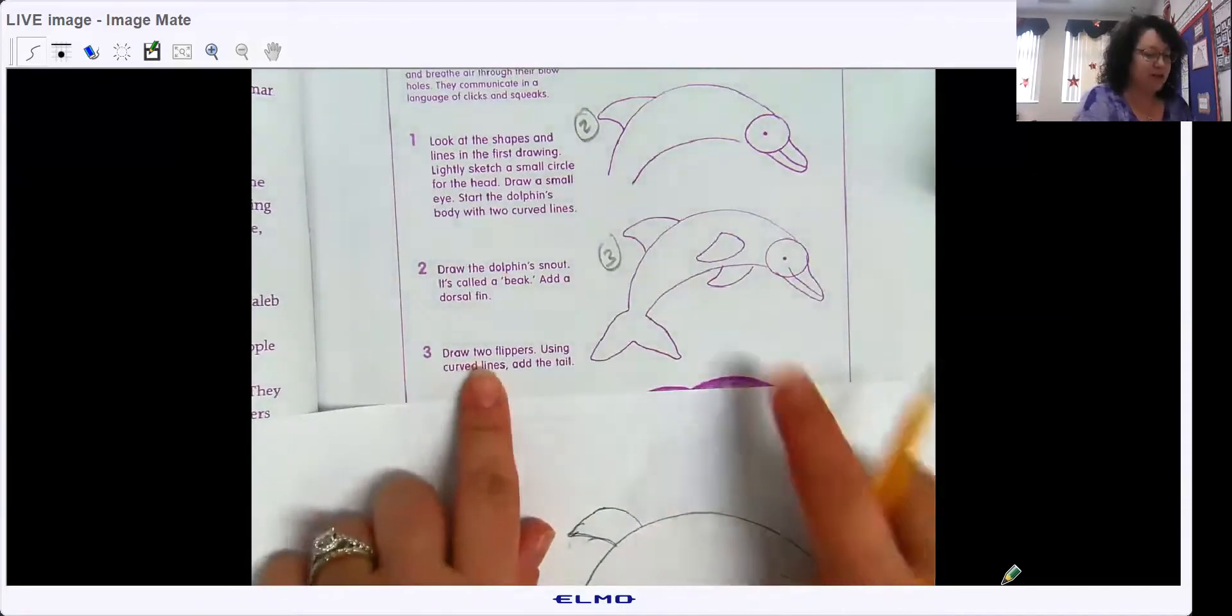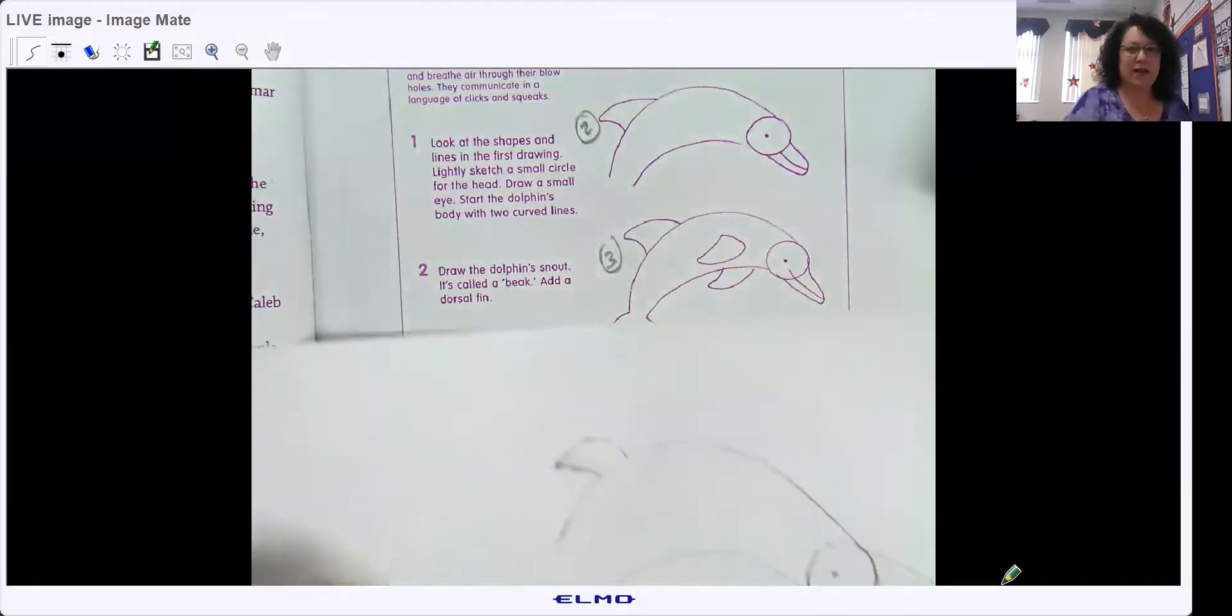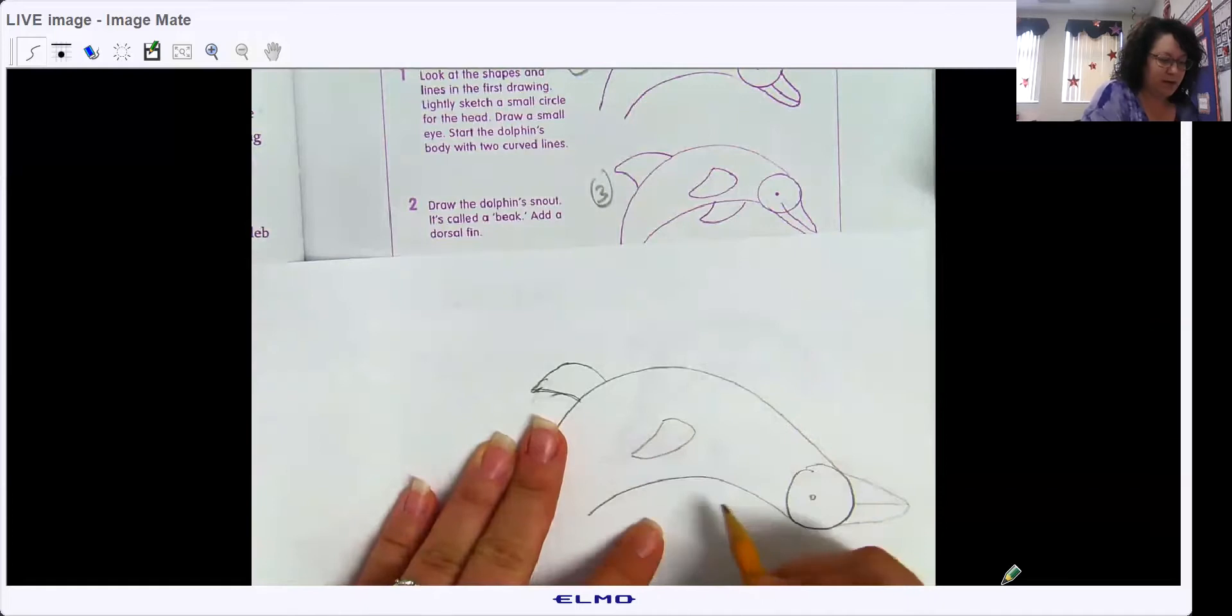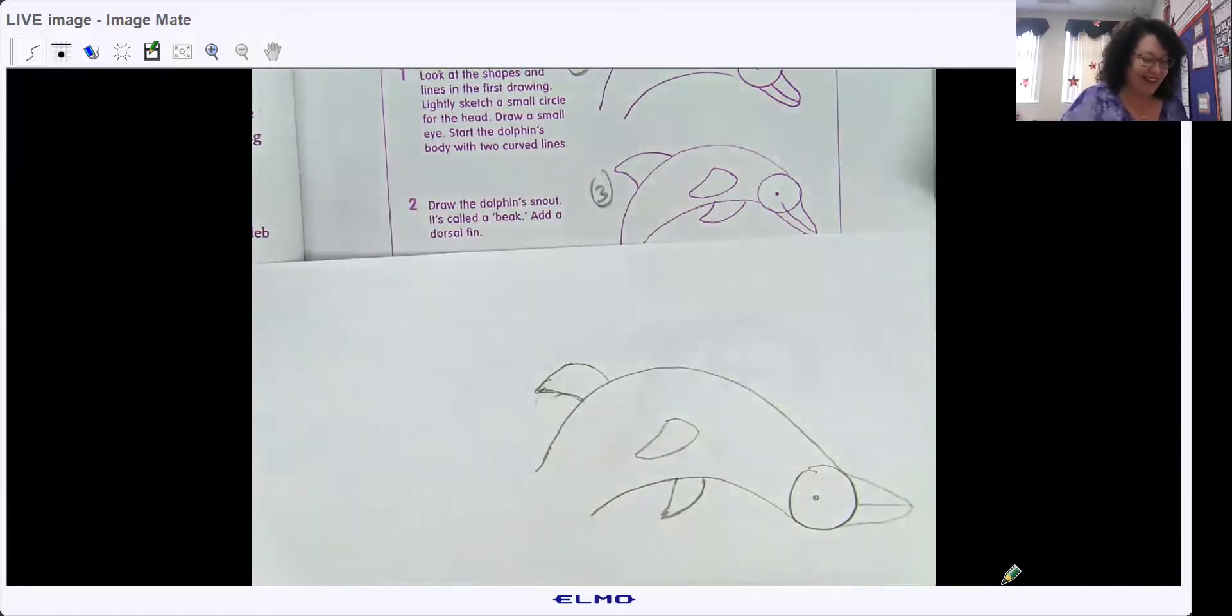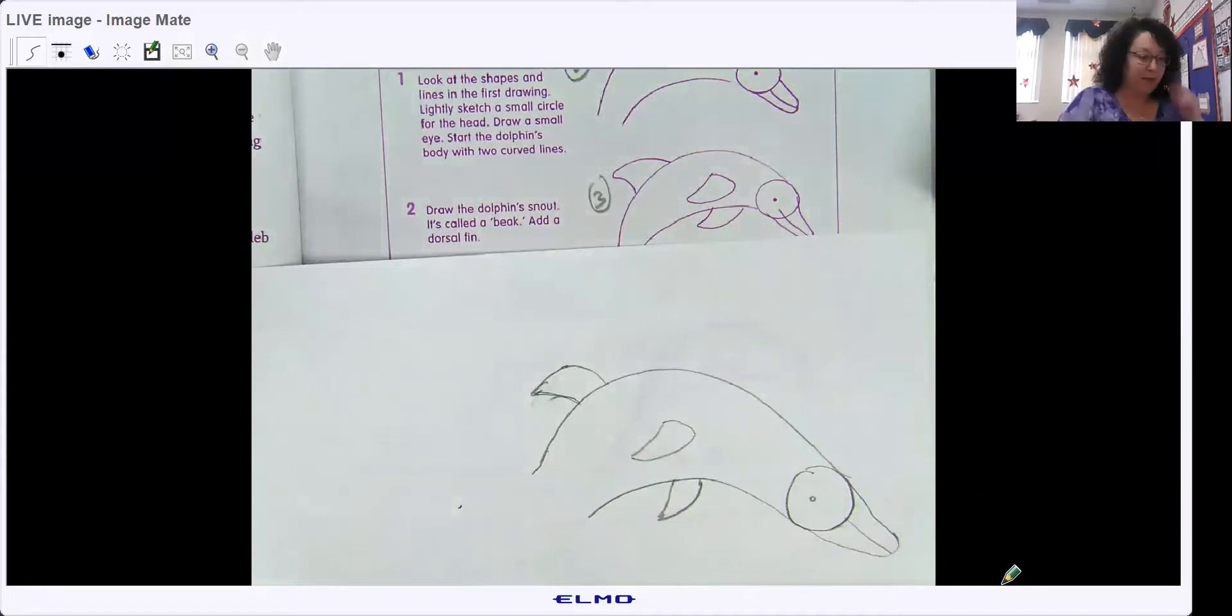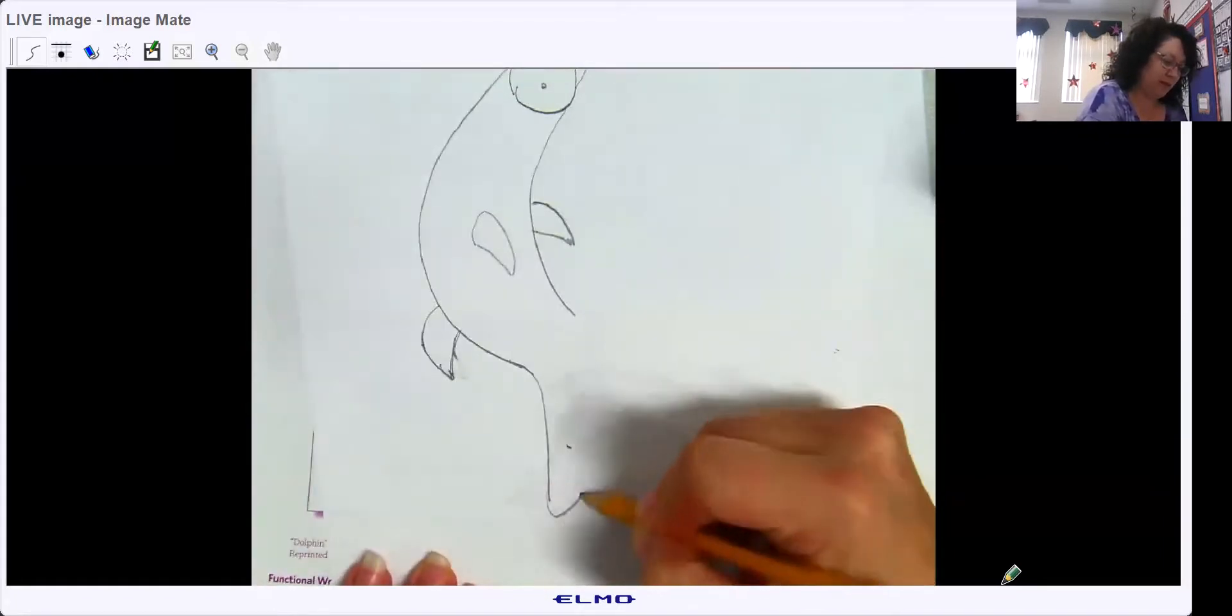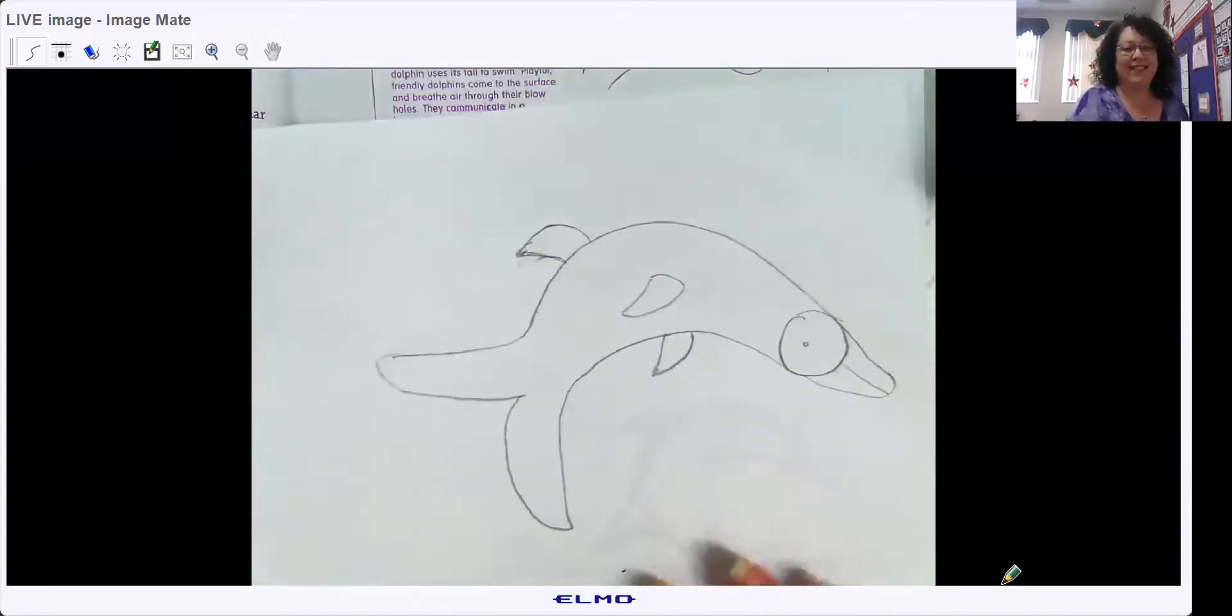Step three, draw two flippers using curved lines, add the tail. So I'm gonna draw my two flippers and then I'm going to add my tail. Sorry this is not a good thing. Oh you know what I don't, I did the snout pointing out instead of down. That's why it looks so much like a bird. It's a little better I guess. We need to draw the tail.